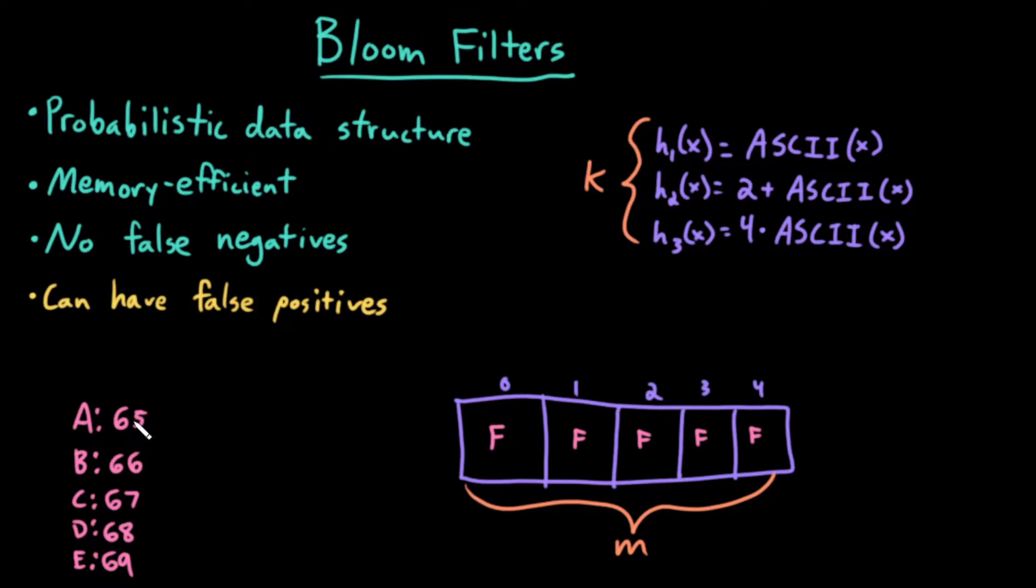So for example, let's try inserting 66 into this bloom filter. So I've defined three hash functions. The first one just returns the ASCII value of the element, the next one returns 2 plus the ASCII value of the element, and the third one returns 4 times the ASCII value of the element. So if I'm doing b, the ASCII value of b is 66. 66 mod 5 is 1, so I would set this index to true.